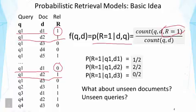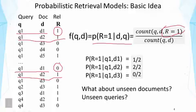Of course, the problem is that we don't observe all queries, all documents, and all relevance values. There will be a lot of unseen documents. We can only collect data from documents we've shown to users, and there are even more unseen queries because we cannot predict what queries users will type. This approach won't work for unseen queries or unseen documents, but it shows the basic idea of a probabilistic retrieval model.